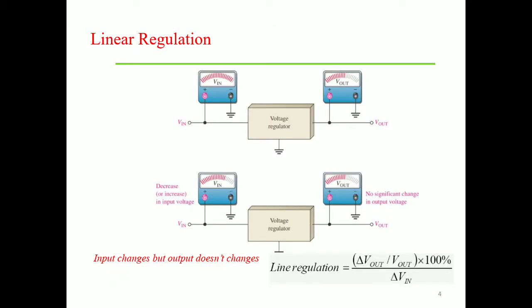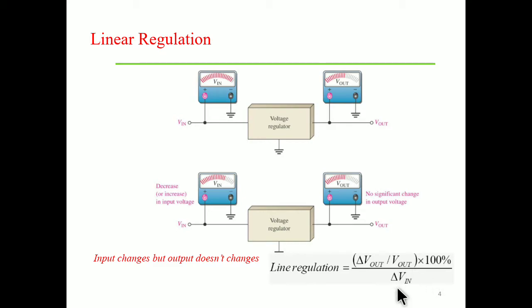There are two important terms: line regulation and load regulation — the two basic categories of voltage regulation. What is line regulation? The purpose of line regulation is to maintain a constant output voltage when the input value changes. There is a change in the input voltage, but there are no changes in the output voltage. The formula for line regulation is: change in output voltage divided by output voltage, as a percentage, divided by the change in input voltage.